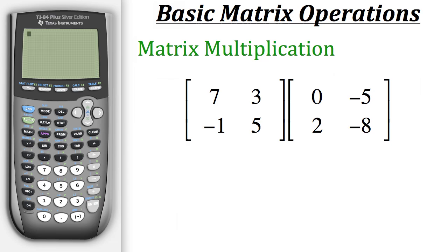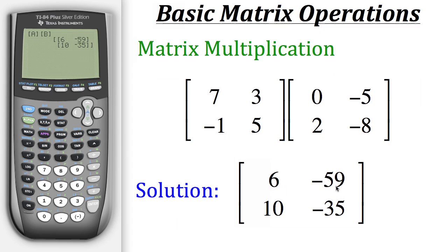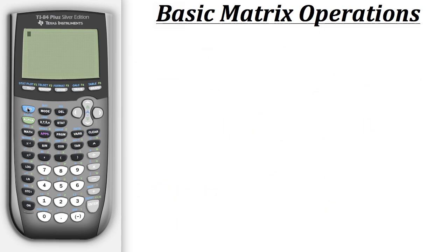Finally, let's try matrix multiplication — matrix A times matrix B. We recall matrix A and then multiply it by matrix B. We don't necessarily need to put a multiplication sign between the two, because when two variables are placed next to each other the calculator automatically assumes multiplication. Hitting enter gives us the resulting two by two matrix with data 6, negative 59, 10, and negative 35. And that's how you do basic matrix operations on your calculator.